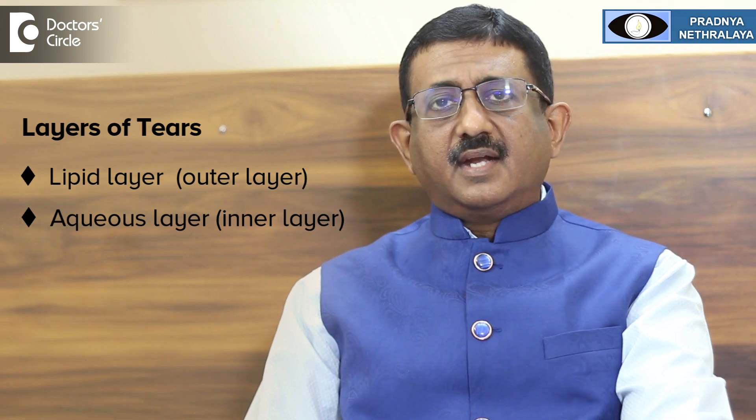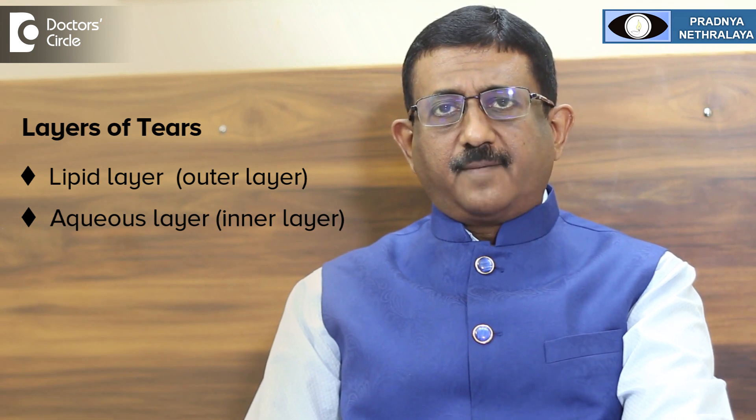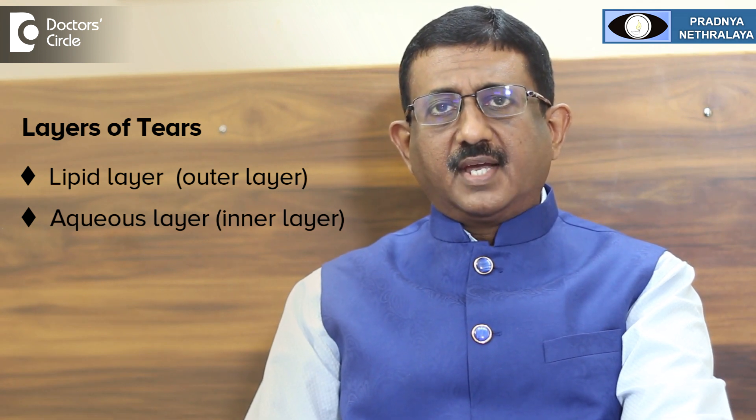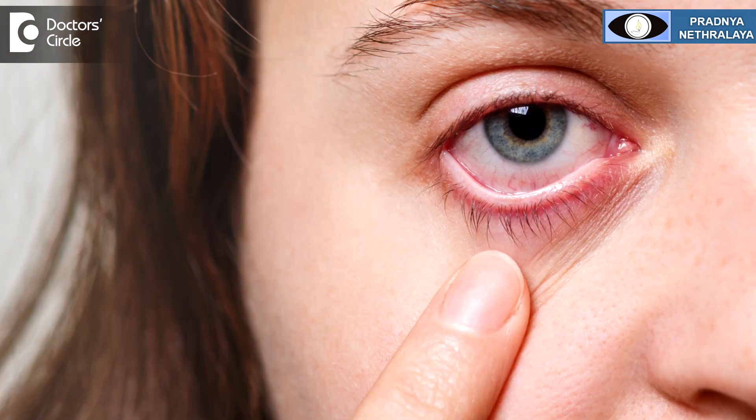As all of us know, tears are made up of multiple layers. The outermost layer is called the lipid layer, which is secreted by the meibomian glands, and the inner layer is an aqueous layer. Any deficiency in either of these layers can lead to dry eyes.